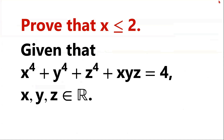Prove that x is less than or equal to 2, given that x to the power of 4, plus y to the power of 4, plus z to the power of 4, plus x times y times z, equals 4, where x, y, z are real numbers.